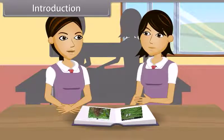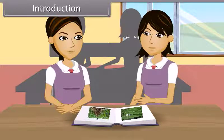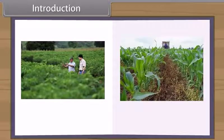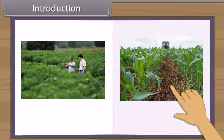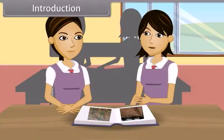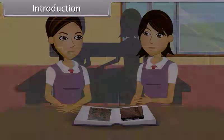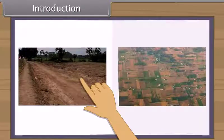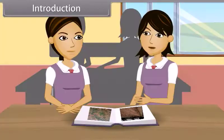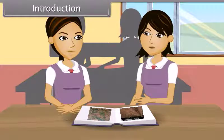India is a very populous country with a population of more than 1 billion people and still growing. To feed this growing population, we need more than a quarter of a billion tons of grain every year. Farming on more land will be required, but as our population is increasing, land for houses and industry is also increasing, which results in a decrease in cultivable land.